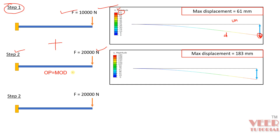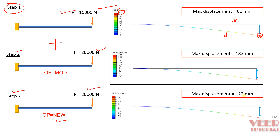Now let's consider op equal to new. With the same step 1 and a similar 20,000 Newton force in step 2 but with op equal to new, the maximum displacement is 122. The displacement has doubled. The conclusion is: when we use op equal to new, it does not carry forward the result from the previous analysis — step 2 is a completely new step. When we use op equal to mod, it carries forward the result from the previous analysis to the next step.